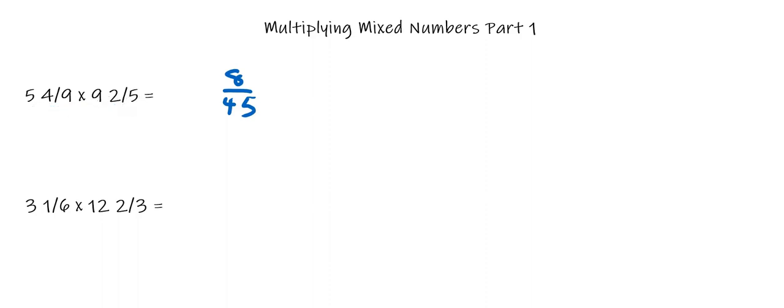Now the next step, look back at your mixed numbers and you want to pair the fractional parts with the whole number part of the other number. So what I mean by that is you take 4/9, that will be paired with 9. You take 5, that will be paired with 2/5.